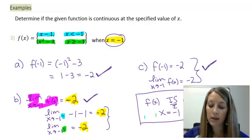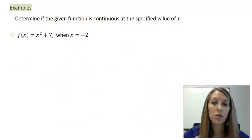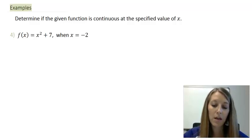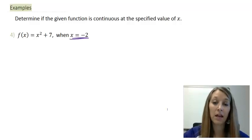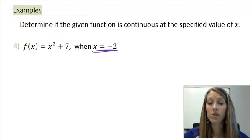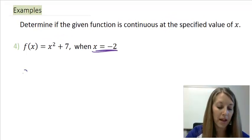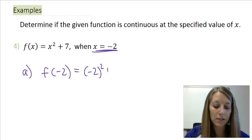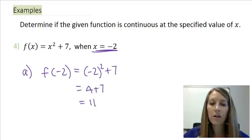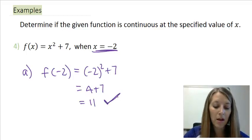One more example: determine whether f of x equals x squared plus seven is continuous for the specified value of x, in this case negative two. If you don't know where to start, begin with property A: is my function defined at negative two? I substitute negative two in — I don't have anything funky going on, no problems whatsoever — so part A holds.